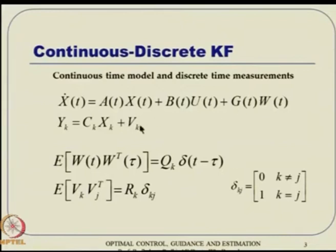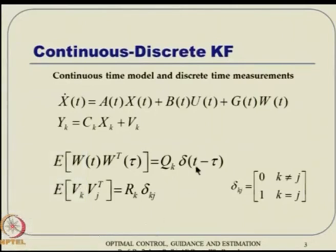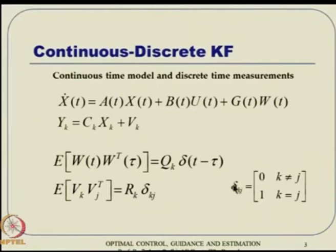Here W is actually continuous time, represented as Q(T - τ). The expected value of V_K times V_J transpose is R_K times the Kronecker delta. Unless K equals J it is 0; if K equals J it is 1.